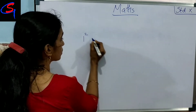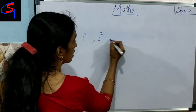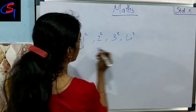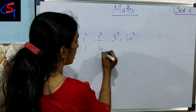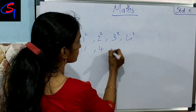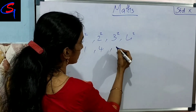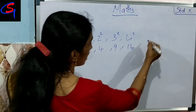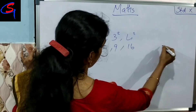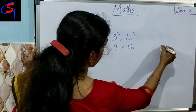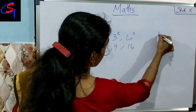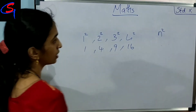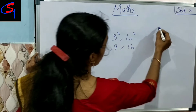1 square, 2 square, 3 square, 4 square. Then you know: 1, 4 — you know 1, 4 — that's the answer. Now n square. n square is equal to n square.